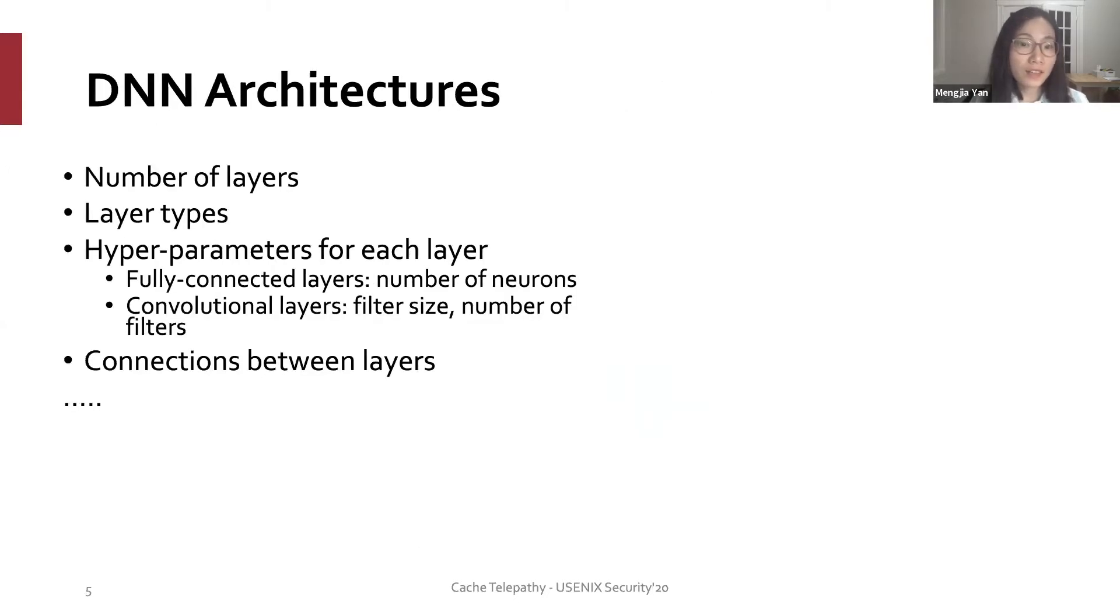Let's take a deeper look at DNN architectures. A DNN architecture specifies the number of layers of the DNN and the type for each layer. Whether it is a fully connected layer or a convolutional layer or a pooling layer. For different types of layers, it specifies different hyperparameters. For fully connected layer, it specifies the number of neurons for the layer.